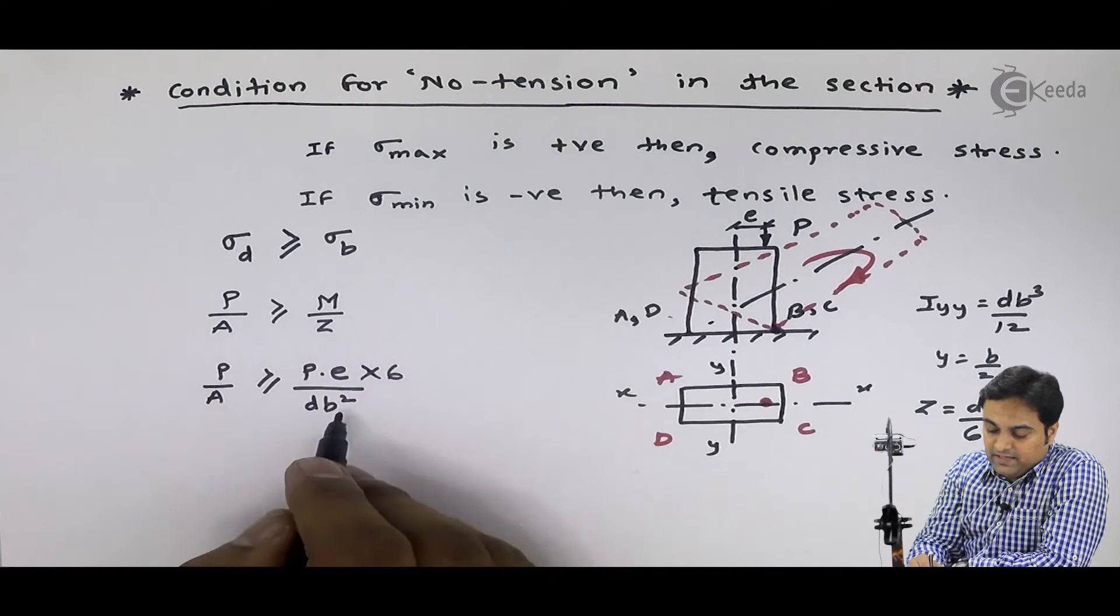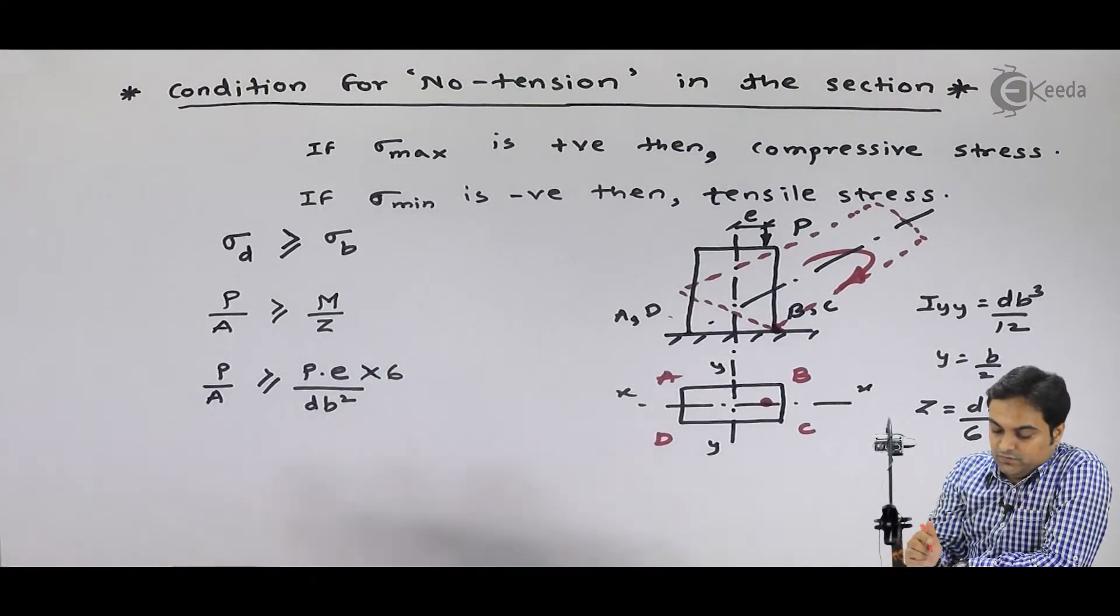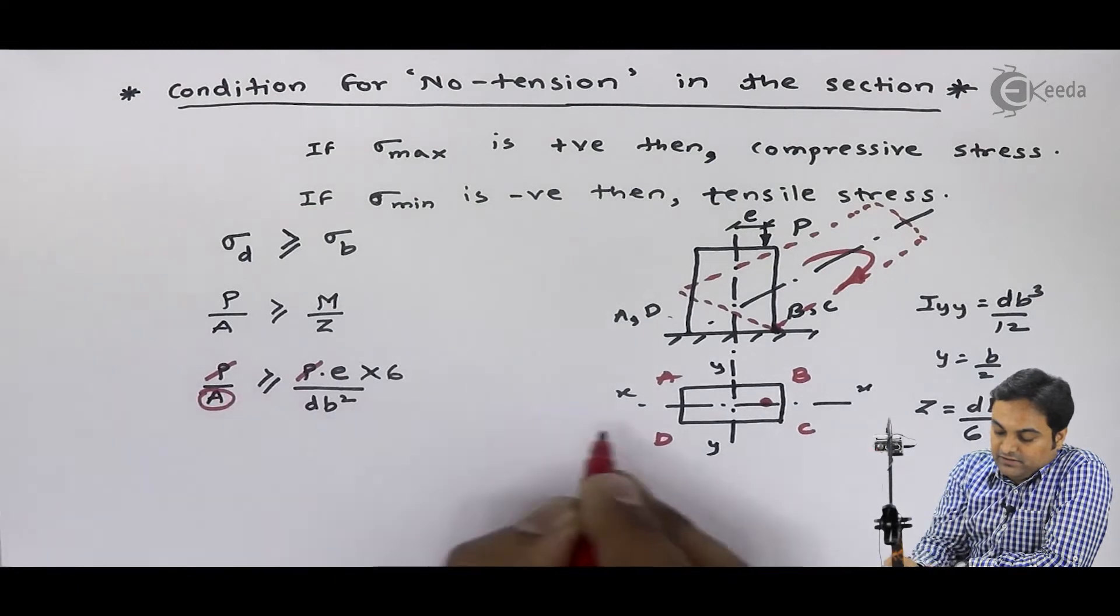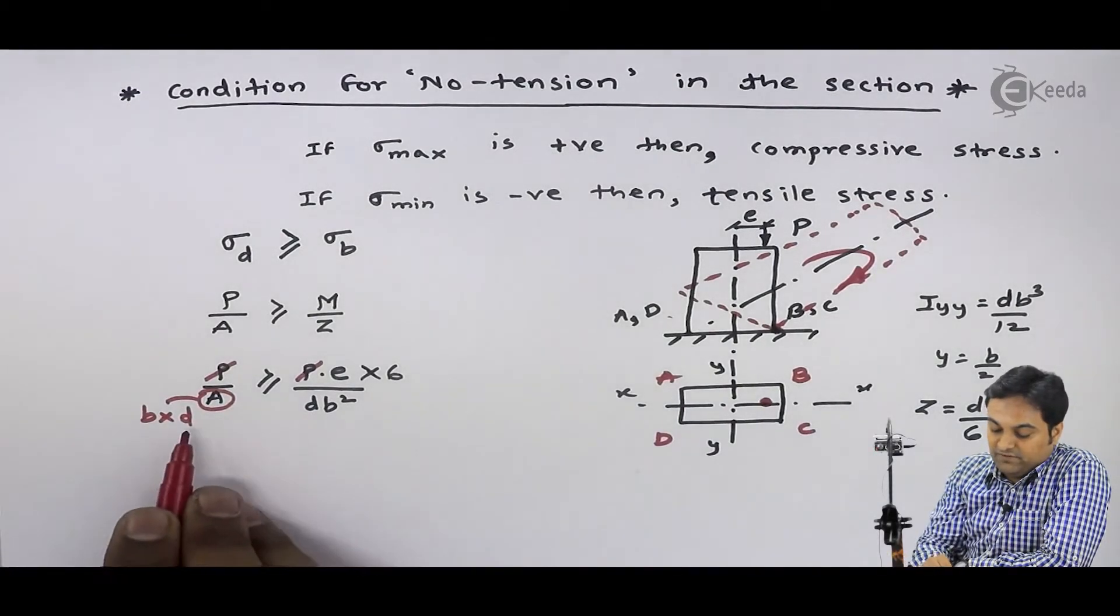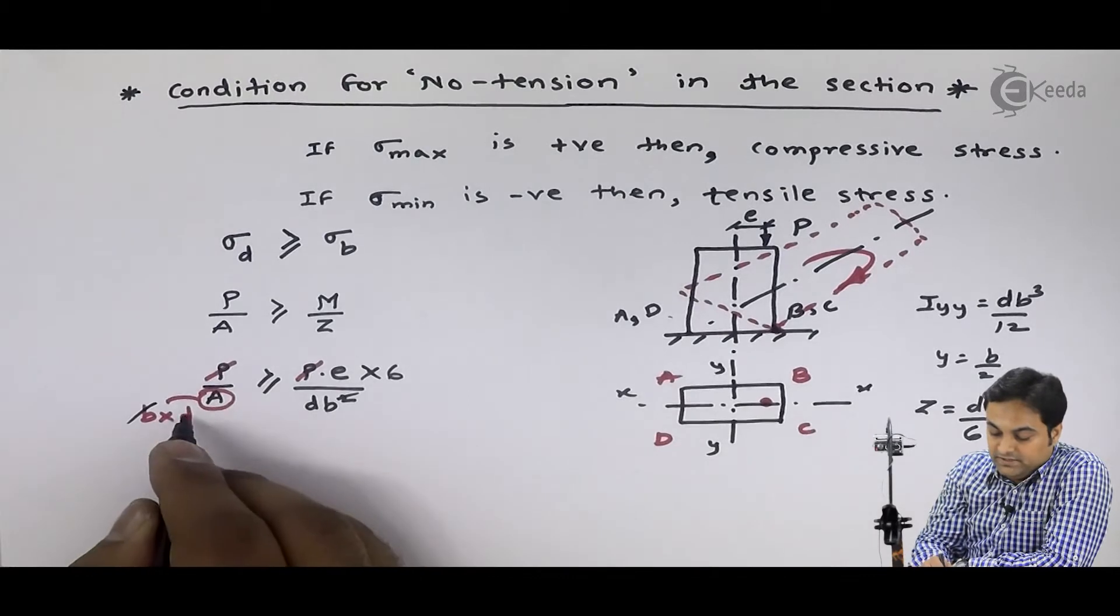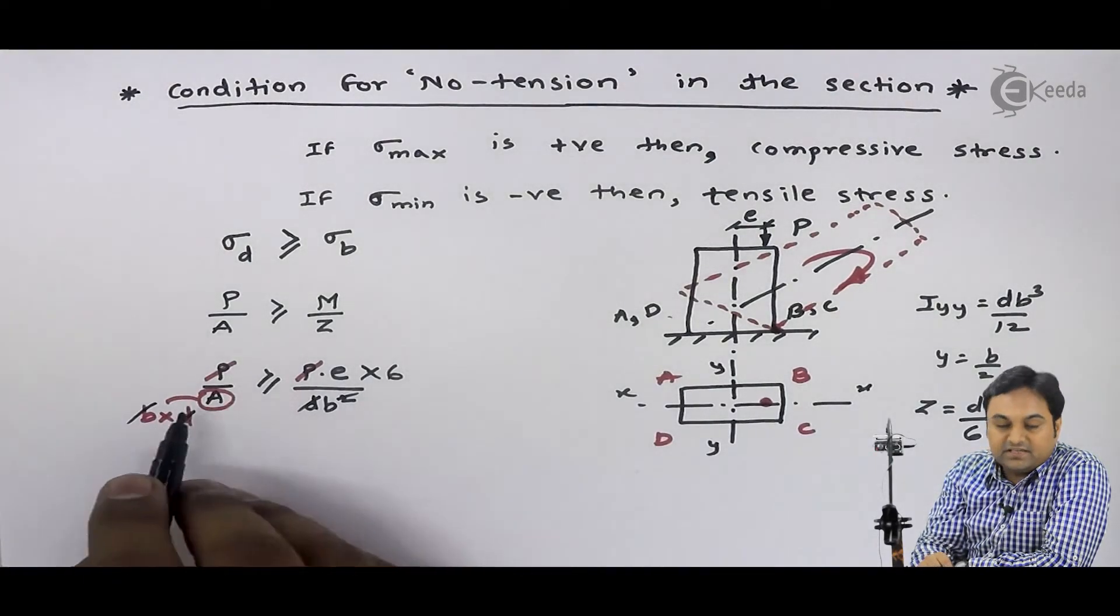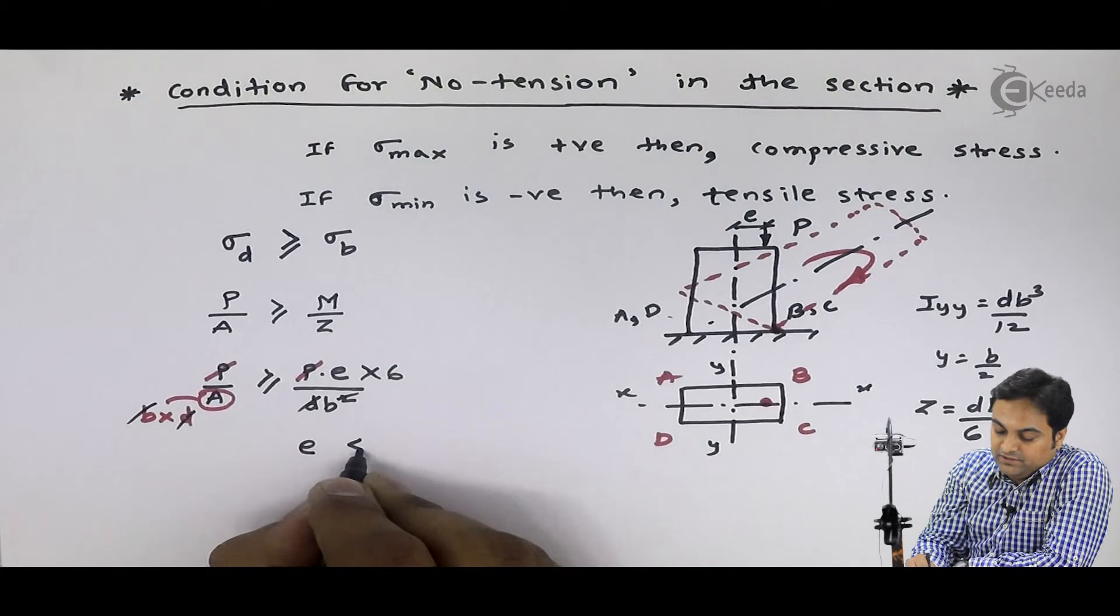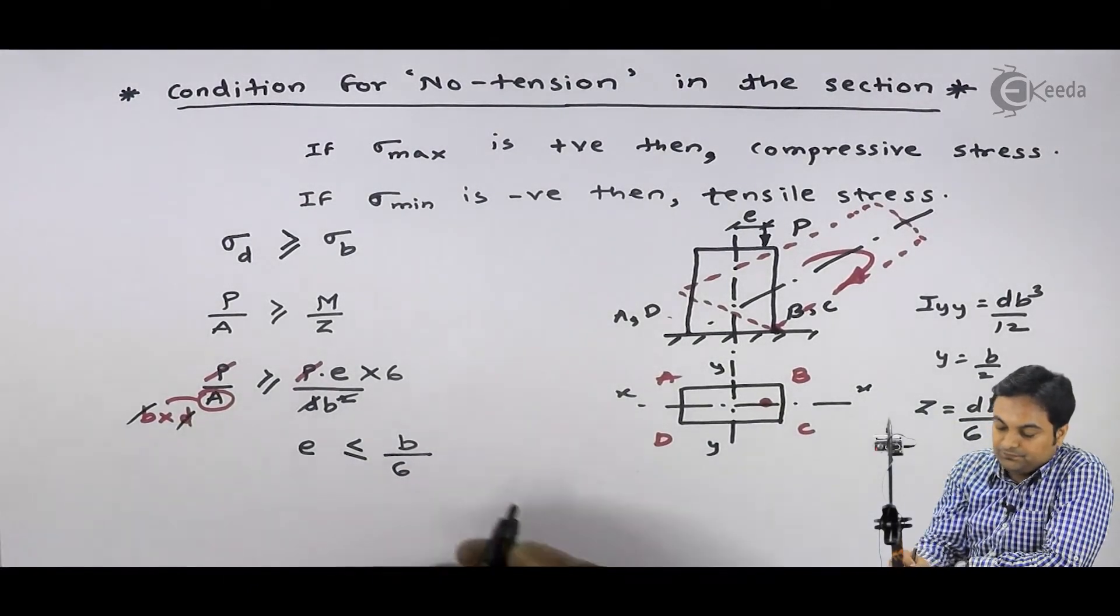Next, see here, what happens after this? If I look at both the sides, then here p and p will get cancel out. In place of area, here I have rectangle section, area will be b into d. From right side, b will get cancel out. B will get cancel out, and one b will cancel. D gets cancel out, and one d will cancel. So, what remains? On this side, everything is canceling. Here, we have 6 divided by b. So, what is e? e, I can write it down, it is less than or equal to b by 6, b divided by 6.